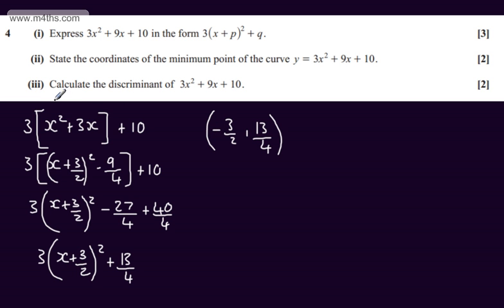In the third part, again for two marks, we need to calculate the discriminant of 3x squared plus 9x plus 10. So we have the quadratic in the form ax squared plus bx plus c. a is equal to 3, b is equal to positive 9 and c is equal to positive 10.